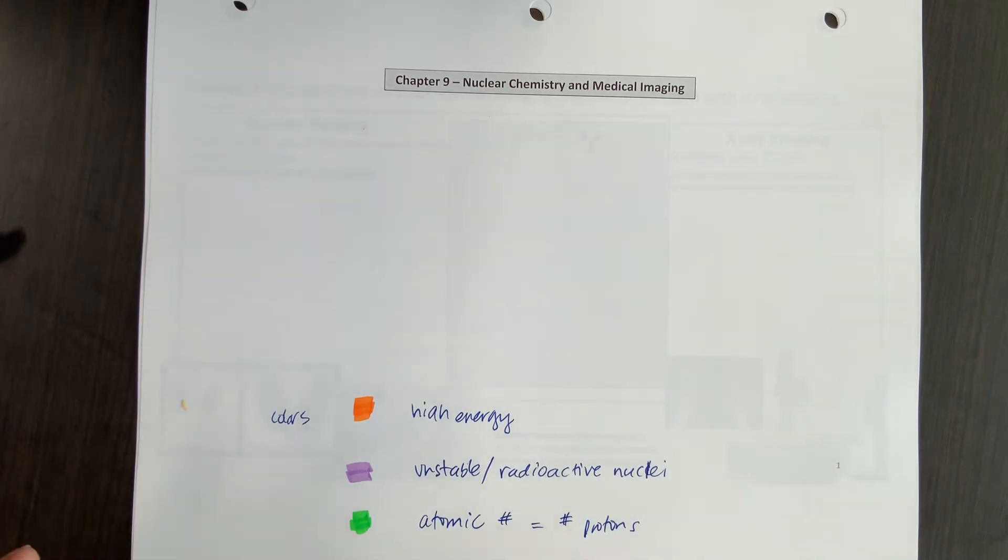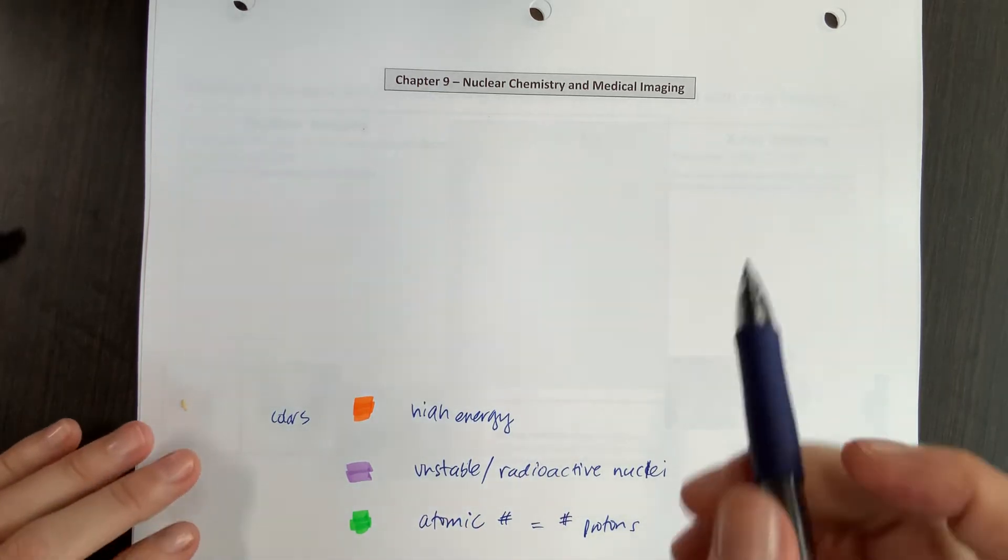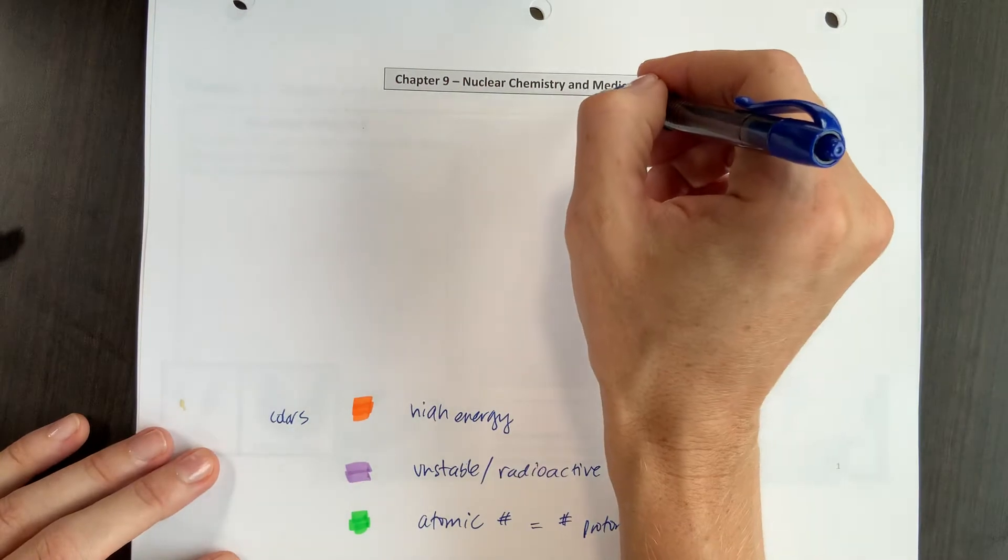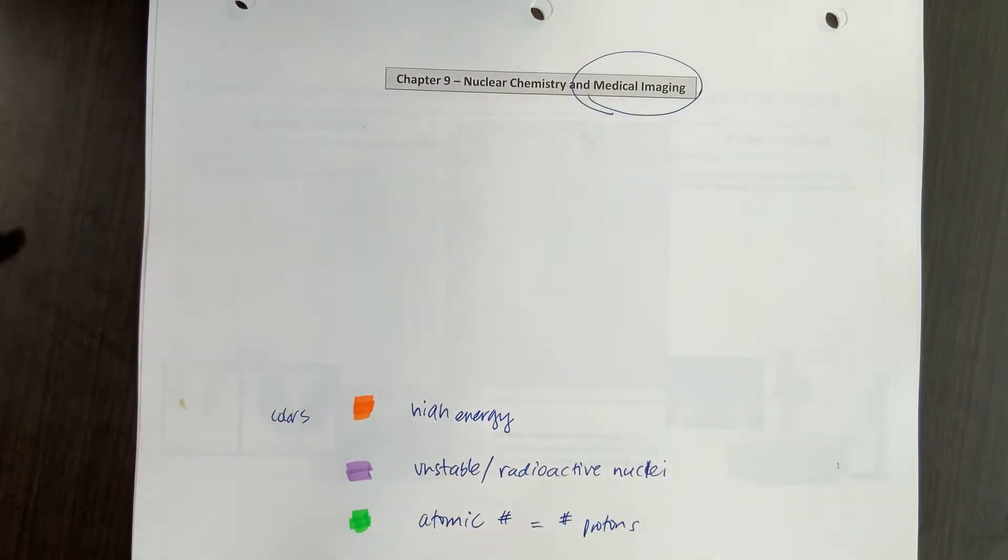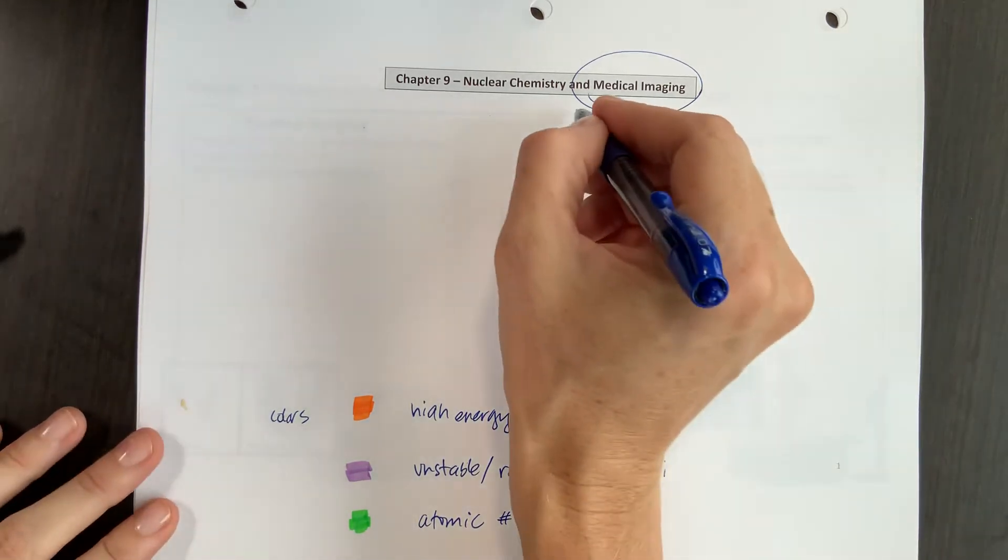So just to give you a quick little flowchart of how things fit together here, we are going to be looking at medical imaging broadly in this chapter. And there's two big categories of how we can do medical imaging.